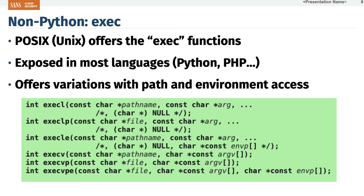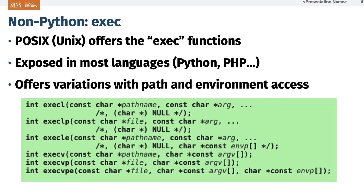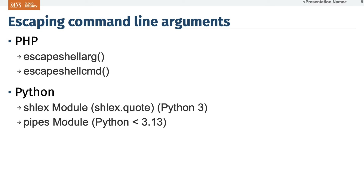One disadvantage of exec is that, unlike the simpler system call, exec will start the new process and replace the current process with the new one — so the calling program will exit. That's not always what you want. Sometimes you want to wait for a response, which means you have to include exec inside a fork. In Python, the subprocess module takes care of that for us. You can still do fork and exec for fine-grained control, but subprocess abstracts that and makes it easier to use.